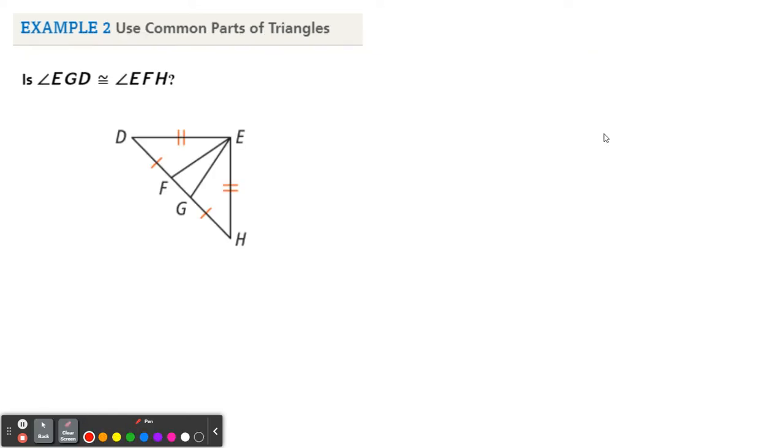Okay, next example. All right, so use common parts of triangles. We want to prove or we want to say is angle EGD congruent to angle EFH. So EGD is right here and EFH is right here. Now we potentially could try to work in this small triangle EFG, but I'm thinking we need to go a little bit bigger.